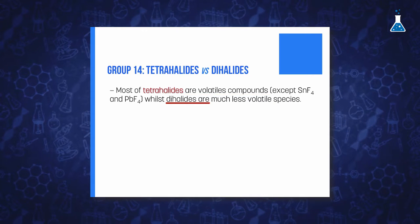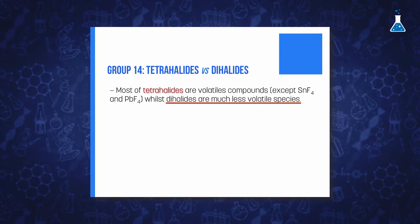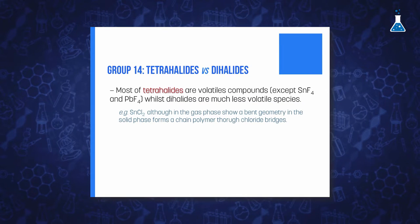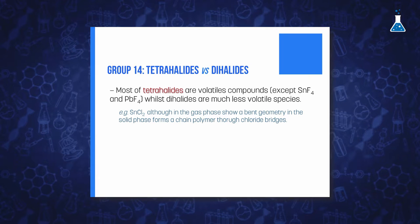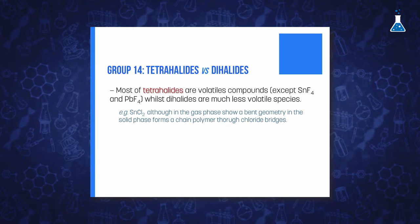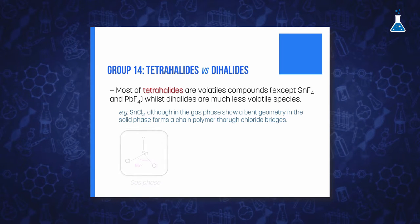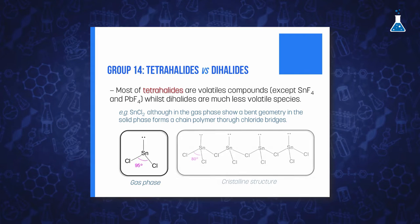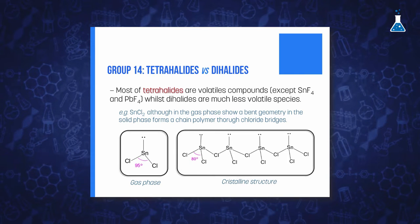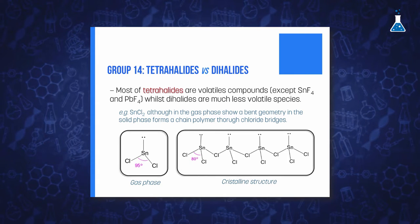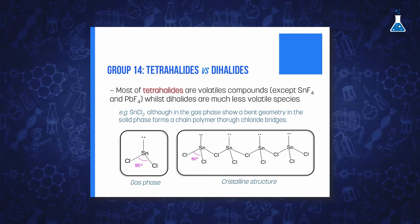However, dihalides are much less volatile than tetrahalides. For example, although tin dichloride shows a molecular bent geometry in the gas phase, in the solid phase it forms an extended polymer through chloride bridges between tin atoms, which adopt a pyramidal environment.